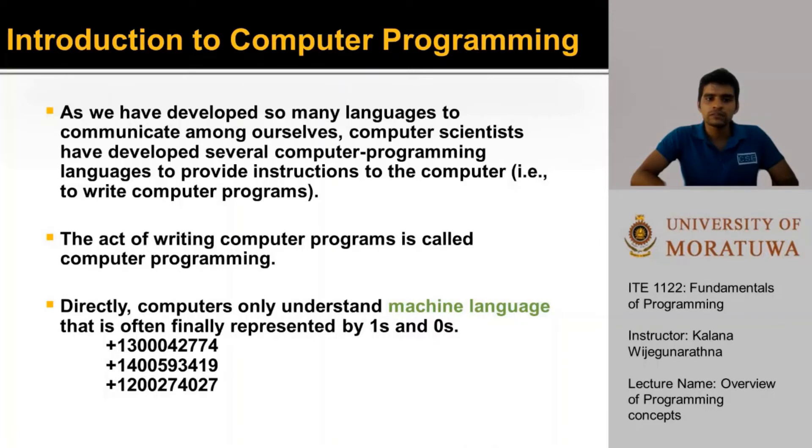We saw the term computer programming language earlier. Just like there are a large number of natural languages that we use to communicate among humans, like Sinhala, Tamil, and English, we need a language to communicate with computers too. These languages are used to specify the instructions that a computer needs to execute. These are known as computer programming languages. And the act of writing these computer programs is called computer programming.